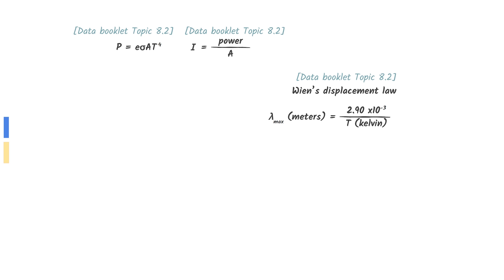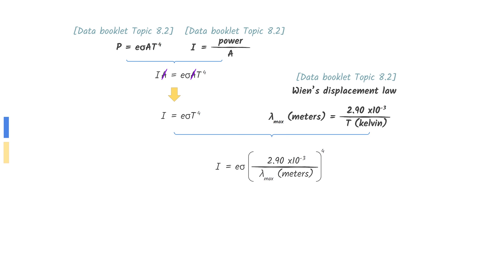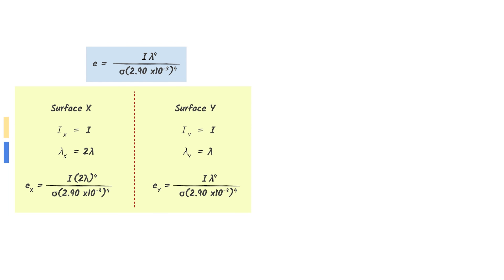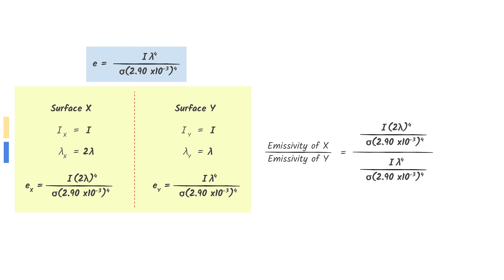First, let's derive an equation with emissivity and peak wavelength. Combine the power and intensity equation given in the data booklet, then substitute in for temperature using Wien's displacement law. Rearrange to make the emissivity the subject. From here, we can derive that the emissivity is directly proportional to the peak wavelength to the power of 4, since everything else is a constant. This means that if the peak wavelength increases by 2, the emissivity increases by 16. Now let's move on to the calculation. Surface X emits radiation of peak wavelength twice that of Y. Divide the equation for X and Y, cancel out to find your answer.